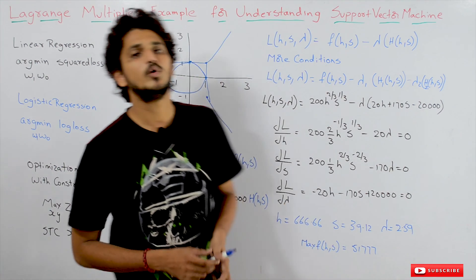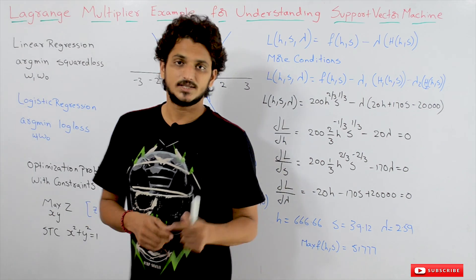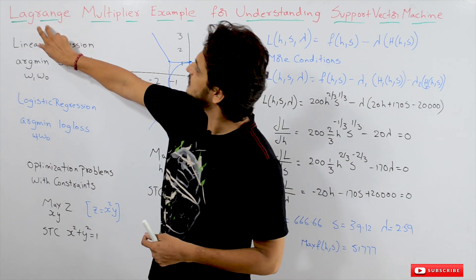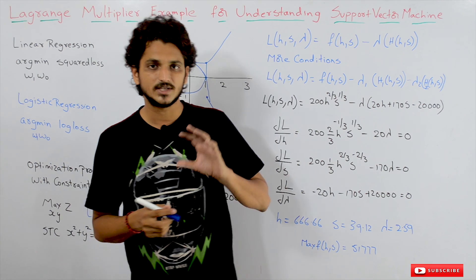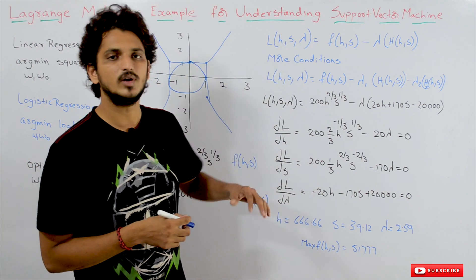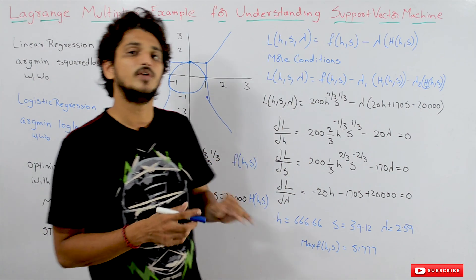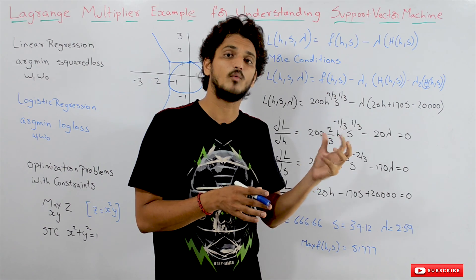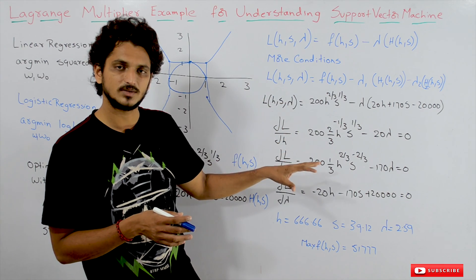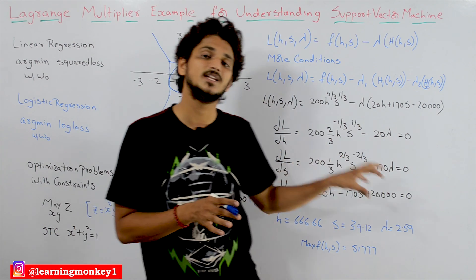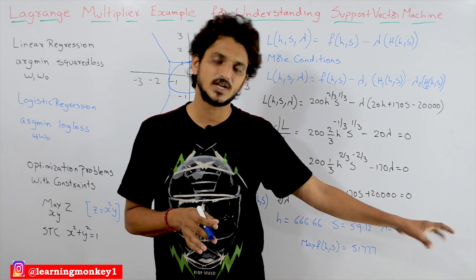Now we will discuss how to solve this optimization problem with conditions. This method was invented by the French mathematician Lagrange — that's why we have the name Lagrange multiplier for solving optimization problems with conditions. We will discuss the sequence of steps required for solving this. If you want to go deep into the mathematics behind this, please watch our basic engineering mathematics playlist and come back here.